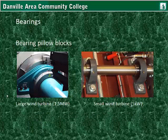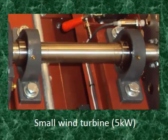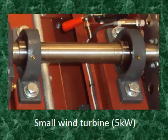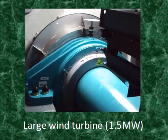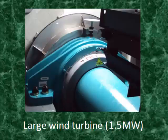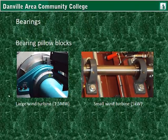Bearing pillow blocks. A pillow block is basically an encasement for the bearing. It provides a housing so it can be bolted to a chassis or some framing. On a wind turbine, the high speed and low speed shafts are mounted into bearing pillow blocks. These have grease fittings so grease can be added while performing maintenance. In a larger 1.5 megawatt wind turbine, the bearing pillow block encases the bearing, which is bolted in and the pillow block is bolted to the bed plate. The entire bearing pillow block is approximately 4 feet wide, and must hold the stresses created by the rotor and by the large shaft itself.